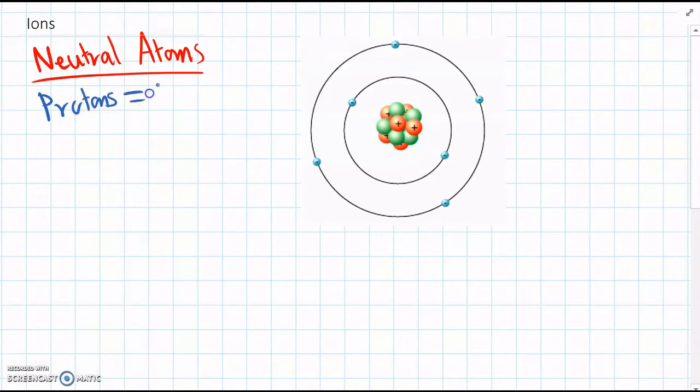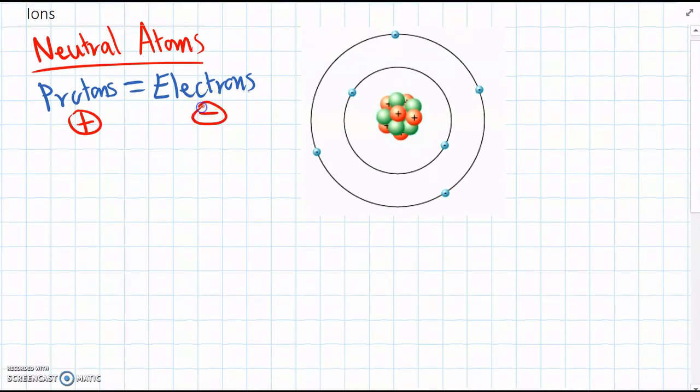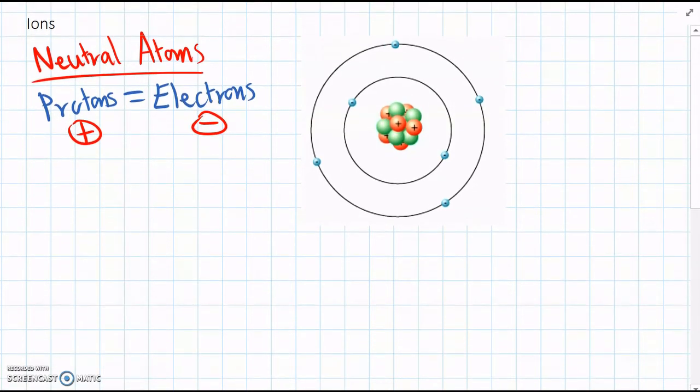So protons equals the electrons because protons have a positive charge and electrons have a negative charge. So in a neutral atom, if we have the same numbers of each, we don't have an overall charge in that atom. No overall charge.